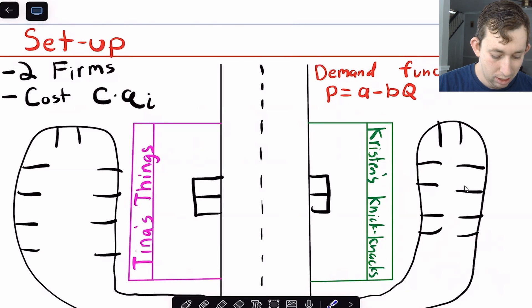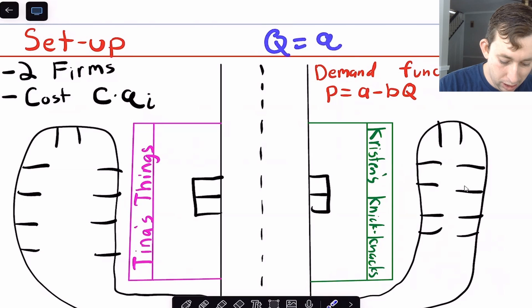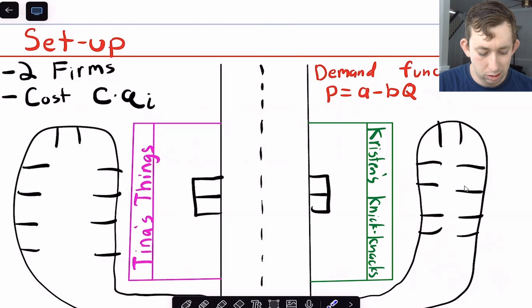So we still have market power, there's only two firms, but maybe the products are very similar. Now the demand function for both of these, for any knickknack or anything that either of these two people are making, is going to be given by this price, and it's going to be some number A minus B times Q. Notice that I've made this capital Q rather than lowercase Q, where I'm going to say that capital Q, so big Q is going to be equal to the sum of lowercase qt plus lowercase qk. So basically just the total number of quantity, the total number of things in this market. And now we're all ready to go.